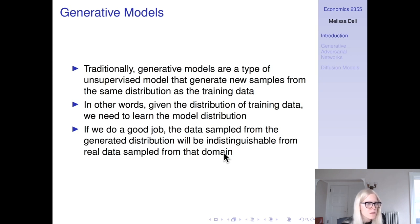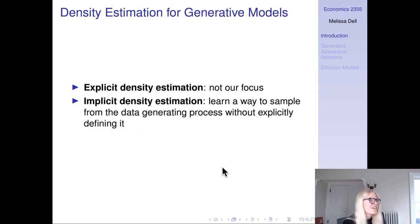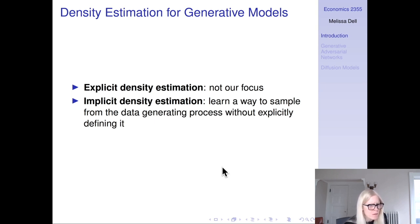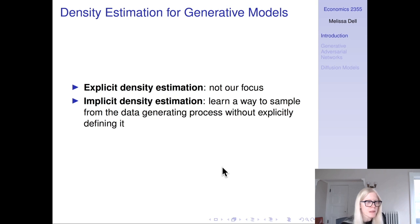Given the distribution of the training data, we'd like to be able to model that distribution. If we do a good job, the data sampled from the generated distribution will be indistinguishable from real data sampled from that domain. We might think about explicit density estimation, but that's not something we'll discuss here. Instead, I'll talk about implicit density estimation — we want to learn a way to sample from the data-generating process without explicitly defining it, because it's going to be a very complicated object.